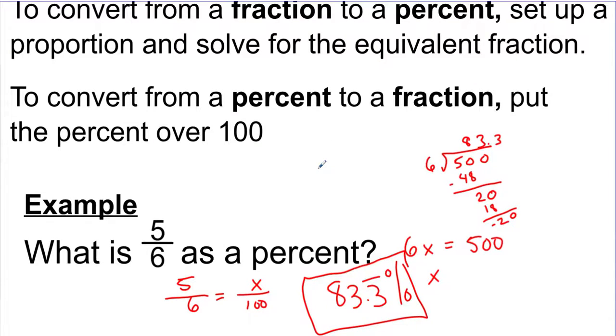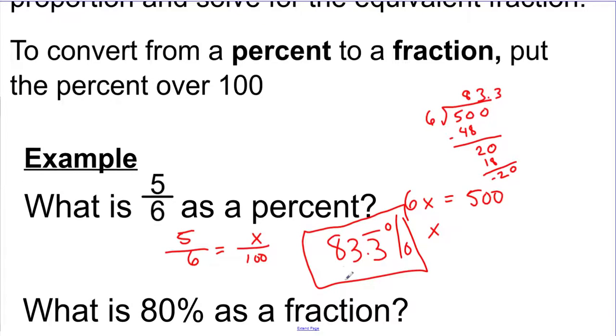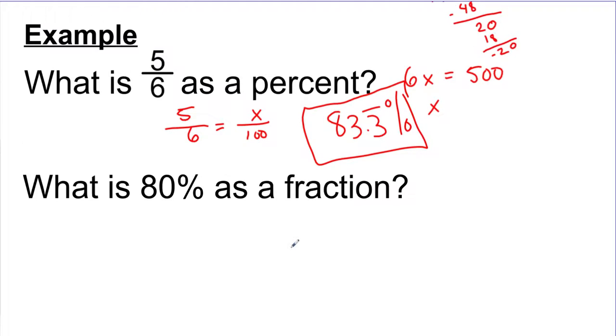To convert it back into a fraction, it's pretty straightforward. If I give you a percent like 80%, that means 80 out of 100. I can write 80% as 80 over 100. Then typically we'll reduce this. The first step in reducing is we're going to chop off a 0, chop off a 0, that's like dividing by 10. Then 8 tenths, I can divide by 2 and divide by 2 and get 4 fifths.